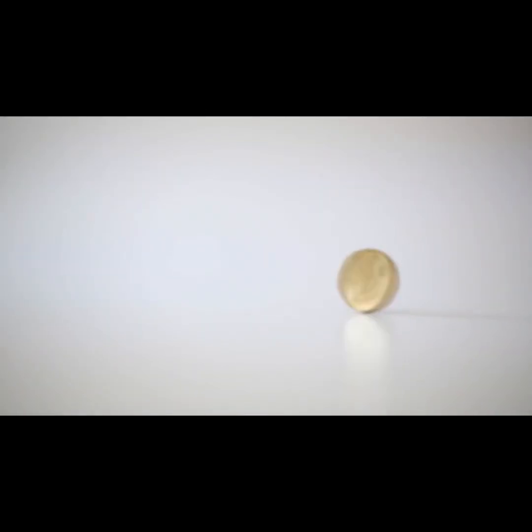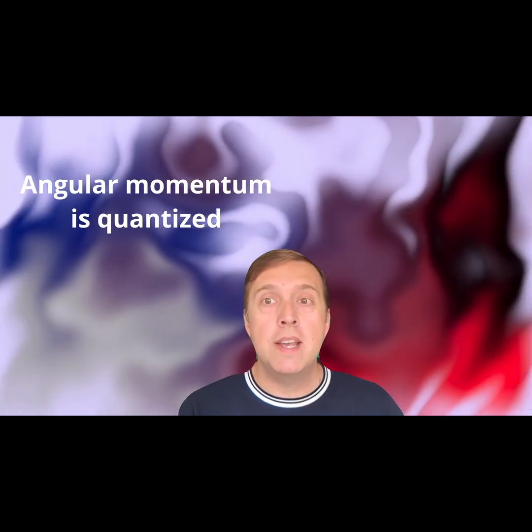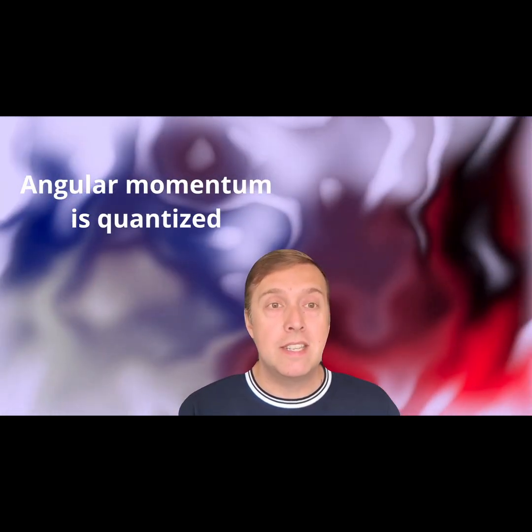Normally, in our everyday world, we'd expect that a spin, or angular momentum of an object, can have any value without restrictions. However, this is not the case in quantum mechanics. Like many other things, angular momentum is quantized, meaning it can only take on certain specific values.